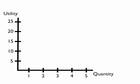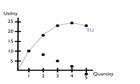Let's chart our utility on the graph. The vertical axis represents utility and the horizontal axis represents quantity of pizza.